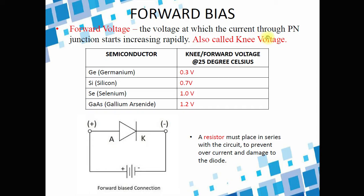The forward voltage is the voltage at which the current through the PN junction starts increasing rapidly. This is also called the knee voltage. For different semiconductors at standard temperature of 25 degrees Celsius, we have different forward voltages: germanium is 0.3 volts, silicon is 0.7 volts, selenium is 1.0 volts, and gallium arsenide is 1.2 volts. A resistor should be connected in series with the diode to prevent over-current and damage. Temperature also plays an important role in the knee and forward voltage of a certain semiconductor.